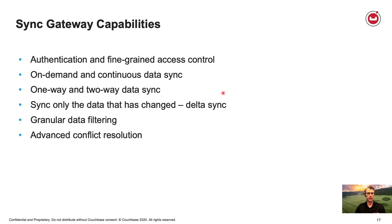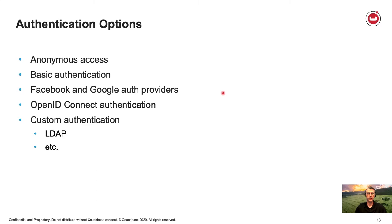Authentication is really from Couchbase Lite to Sync Gateway. In your mobile app you have to connect to Sync Gateway and authenticate. There are several ways: first is anonymous access, which we don't recommend — maybe use it in development. Second is basic authentication, which I'll be using in this user profile demo, simply providing a username and password. There's also Facebook and Google authentication providers, OpenID Connect authentication, and custom authentication options such as LDAP. The last option may require additional code or an external service to do authentication.